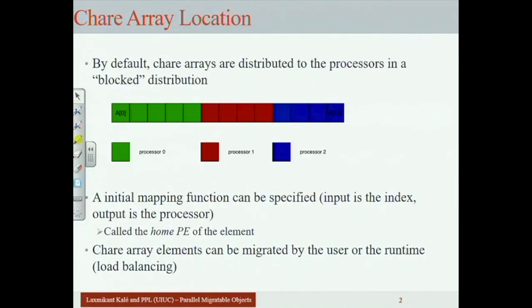Where are the elements of the chare array located? On which processors? The first-level answer is: none of your business as a programmer — don't worry about it. But sometimes you want to know. A typical default for a one-dimensional array might be a block mapping: the first so many chares live on one processor, the next so many on the next, and so on. If you have 1000 chares and 10 cores, zero to 99 might be on core zero, and so on. But this is just the initial distribution — the runtime system is free to migrate them during execution for load balancing or fault tolerance. You have some control over the initial mapping.